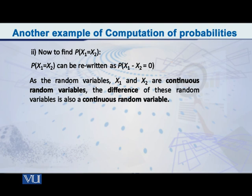Suppose instead that we are wanting to find the probability that x1 is equal to x2. This is another interesting case. The probability of x1 equals x2 can be rewritten as the probability that x1 minus x2 equals 0.